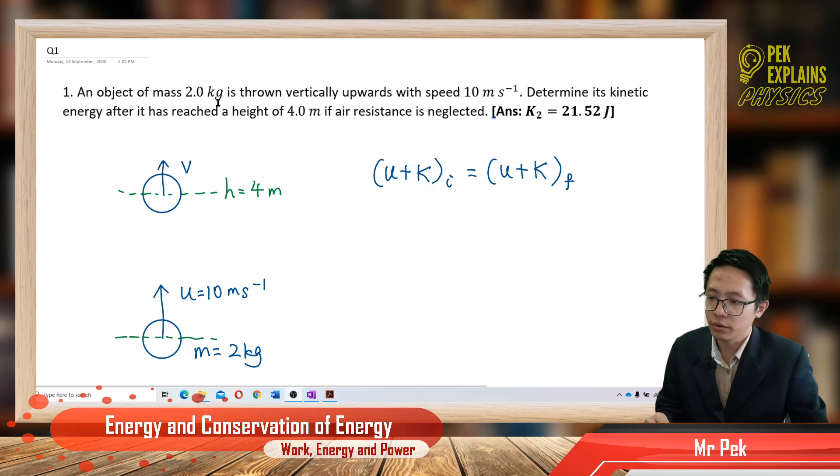An object of mass 2 kg is thrown vertically upwards with speed 10 m per second. Determine its kinetic energy after it has reached a height of 4 m if air resistance is neglected.